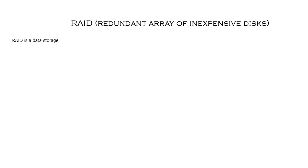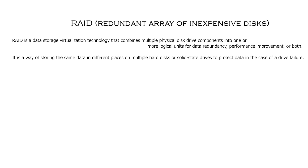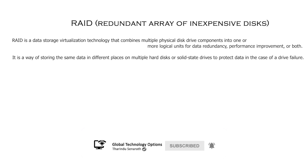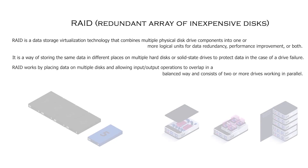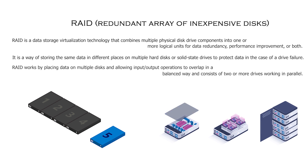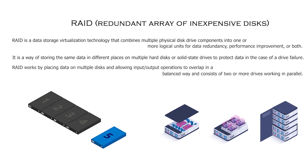RAID is a data storage virtualization technology that combines multiple physical disk drive components into one or more logical units for data redundancy, performance improvement, or both. It is a way of storing the same data in different places on multiple hard disks or solid-state drives to protect data in the case of a drive failure. RAID works by placing data on multiple disks and allowing input-output operations to overlap in a balanced way, and consists of two or more drives working in parallel.